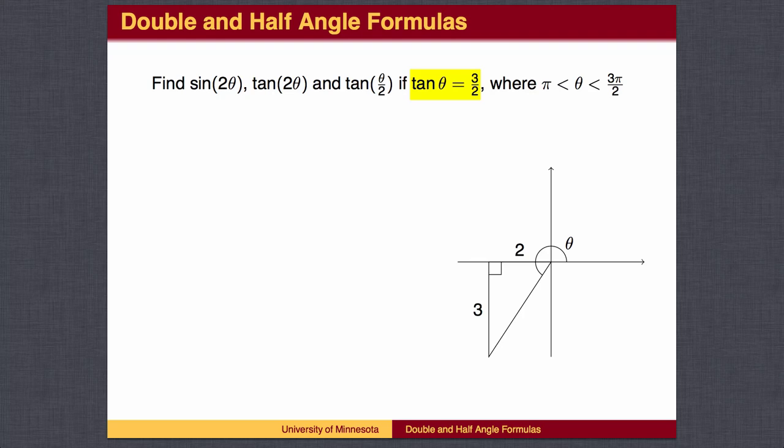Note that we are given that theta is in the third quadrant, so I drew the hypotenuse going down and to the left. Since theta is in the third quadrant, the sine and cosine will be negative, so perhaps it is better to label the legs with negative numbers. We can then use the Pythagorean theorem to find the length of the hypotenuse.